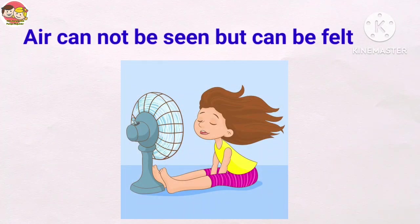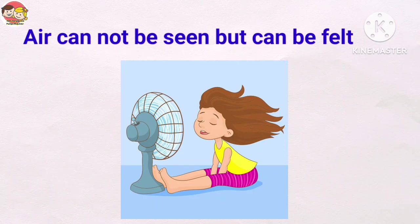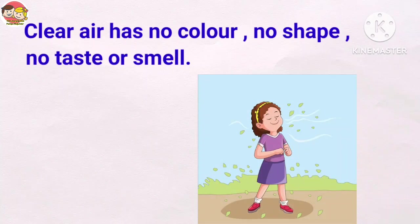Next, air cannot be seen but can be felt. Air is everywhere but we cannot see it; we can feel it when it moves — for example, switch on the fan and feel the cool air. Also, clear air has no color, no shape, no taste, or smell.